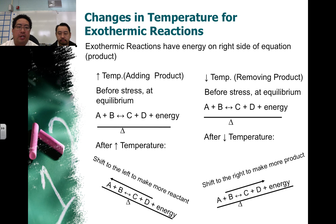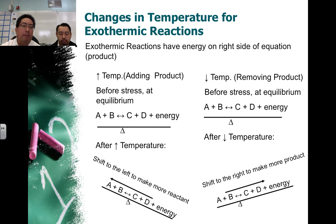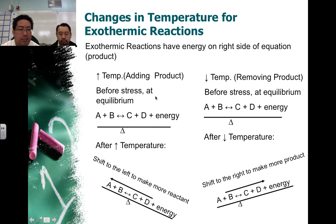In addition to changing concentrations, we can also change the temperature. When we change the temperature, it's going to make a difference whether we have an exothermic or an endothermic reaction. For exothermic reactions, the energy is going to be on the right-hand side — it's almost like if it was a product. So when we raise the temperature, that's adding energy, and it's like adding product. What ends up happening is we have an imbalance, and we end up shifting to the left and making more reactant in order to reestablish equilibrium.